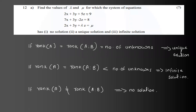Find the value of lambda and mu for which the system of equations 2x + 3y + 5z = 9, 7x + 3y - 2z = 8, 2x + 3y + lambda*z = mu has: first, no solution; second, a unique solution; and third, infinite solutions.